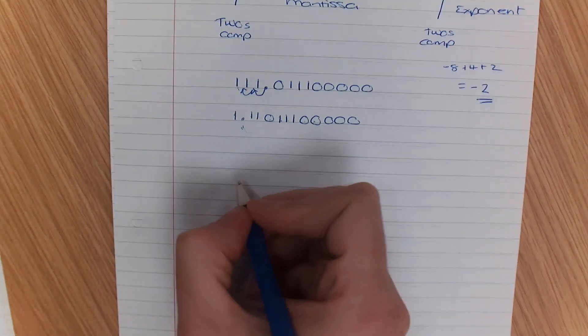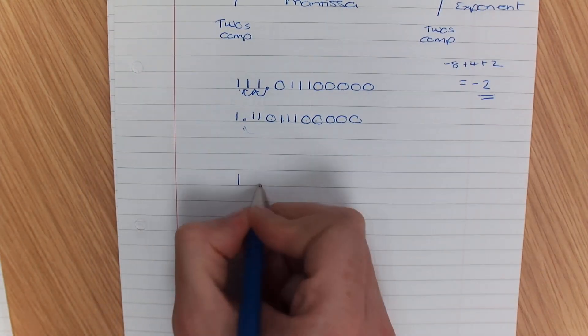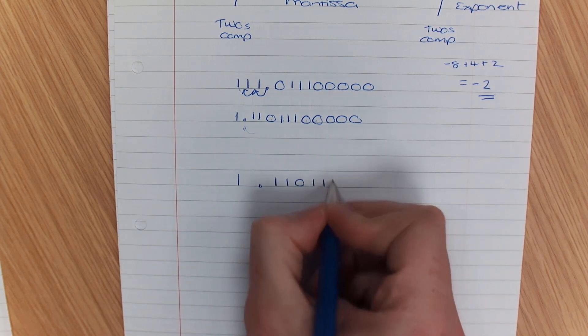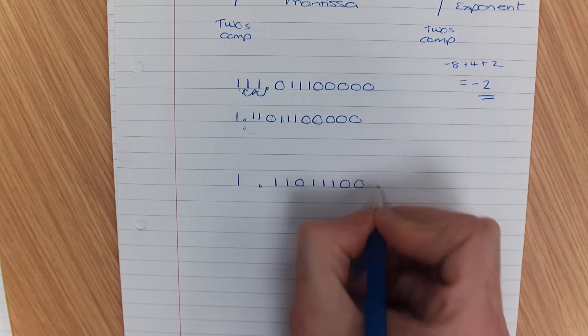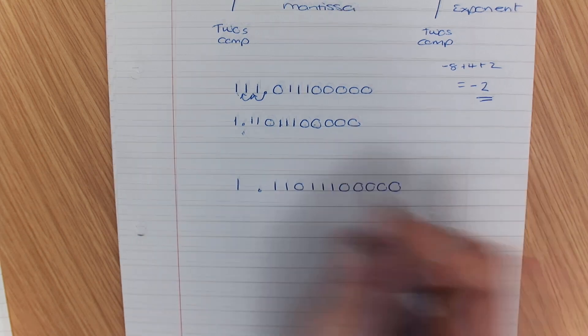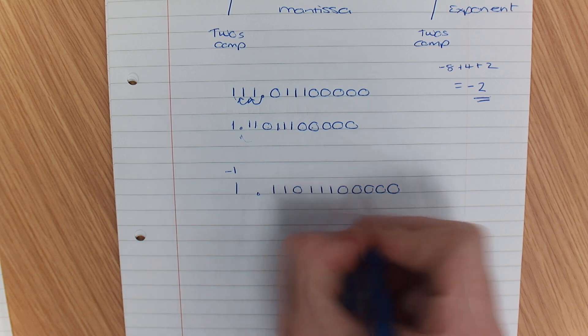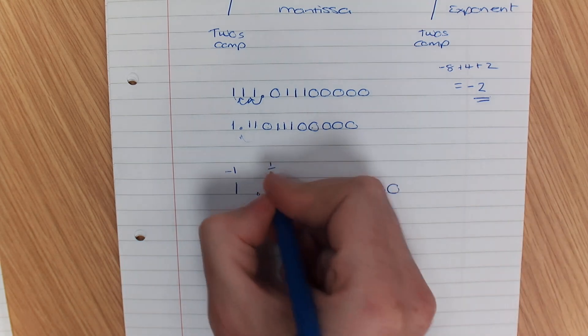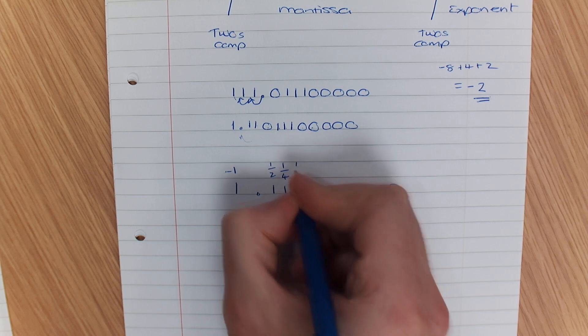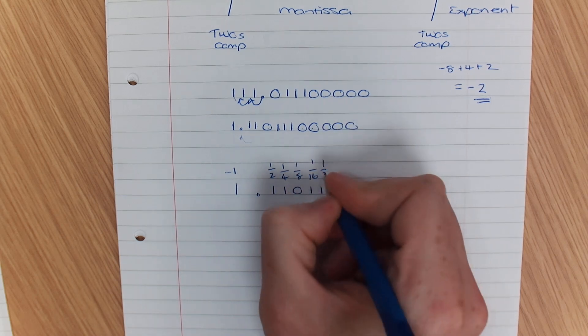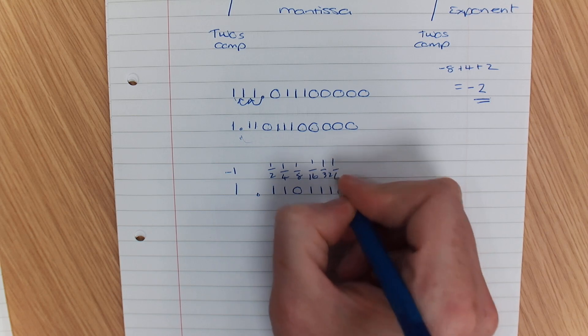Now is the part where you've got to work out. So let me make this neater for you: 1, 1, 1, 0, 1, 1, 1. I'm just spacing this out so you can see it better. I know that this is minus 1, but these numbers are positive. So we've got a half, a quarter, 8, 16, 32, and 64.